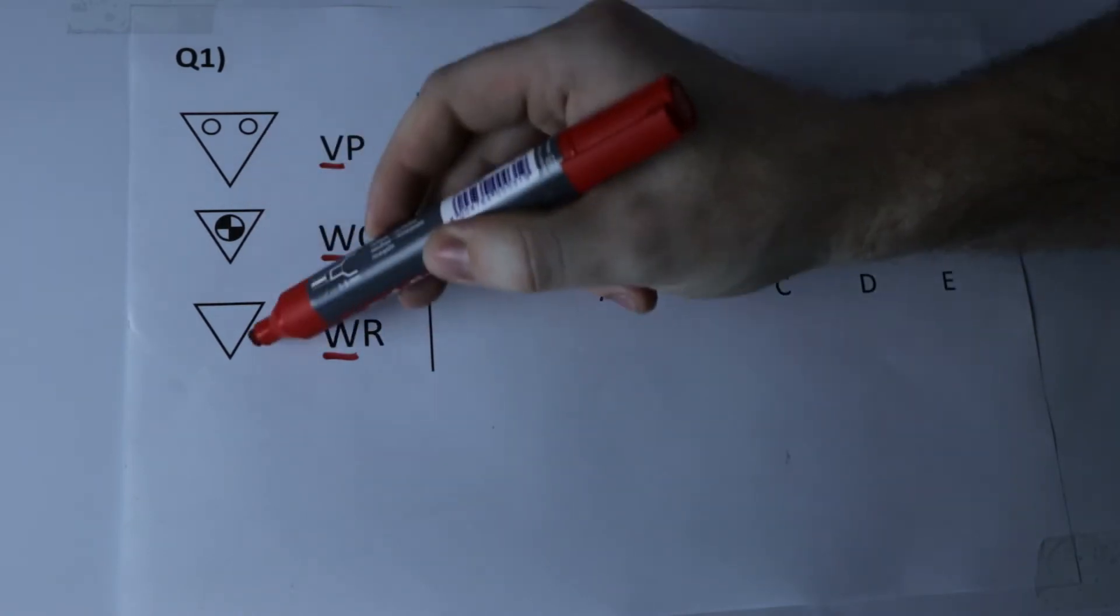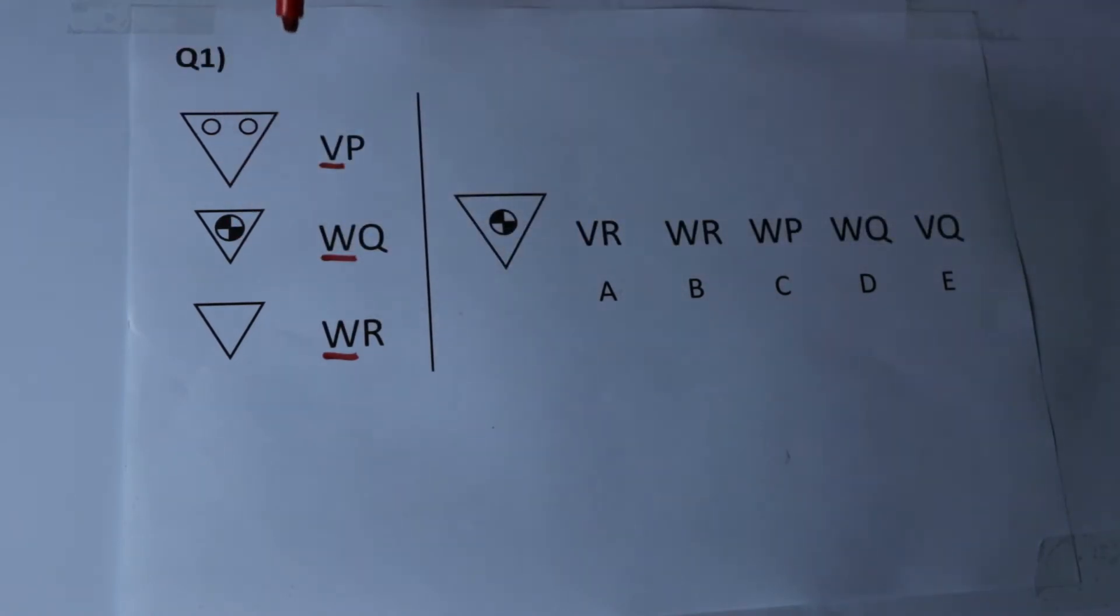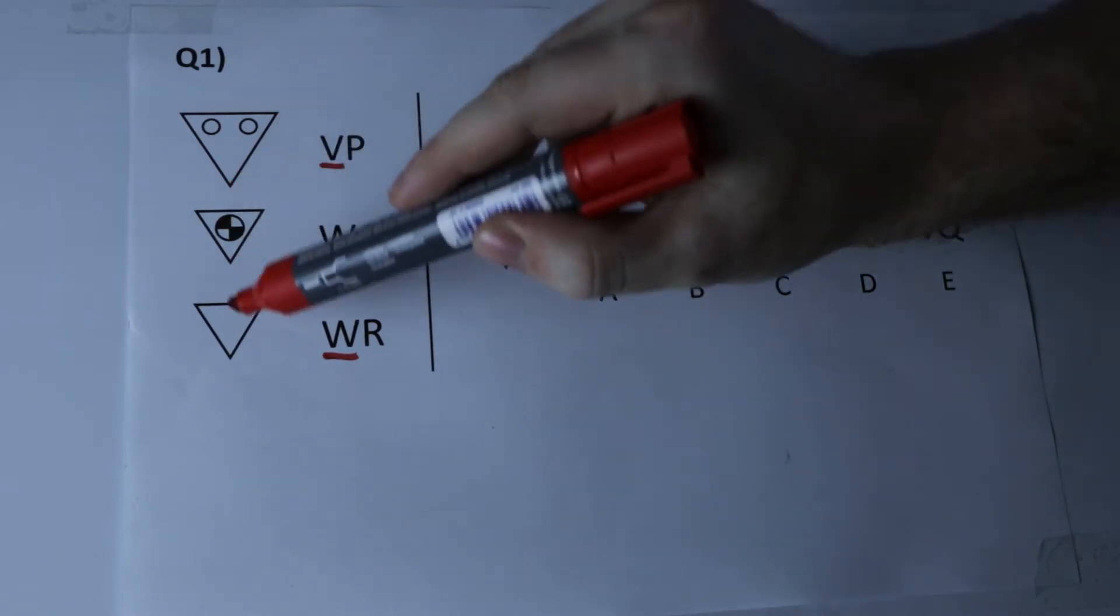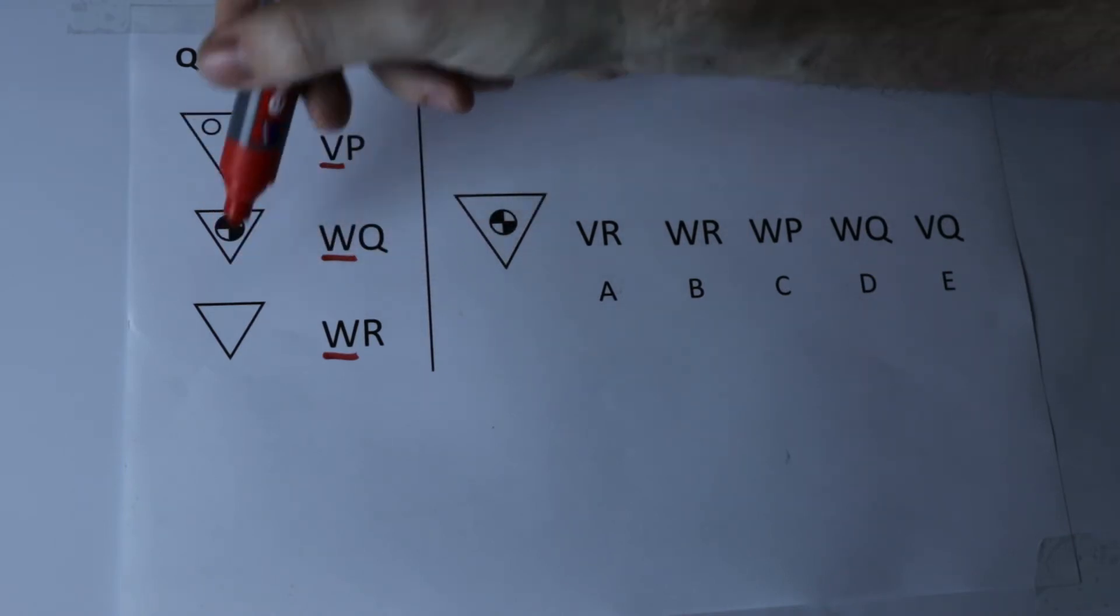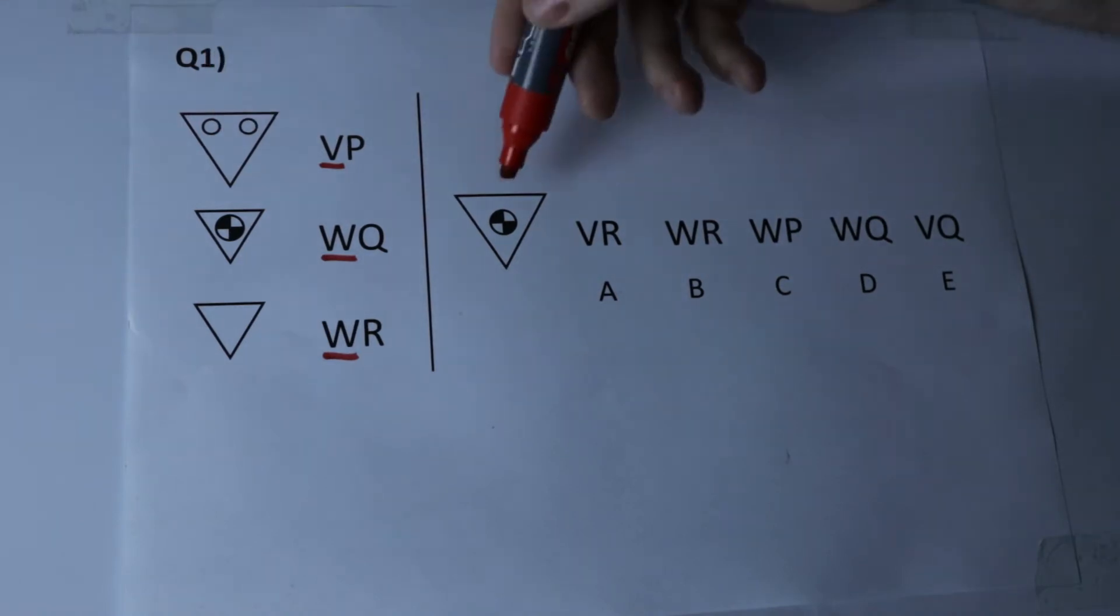What do these two shapes here have in common that W could be representing which is different in the top shape that V would be representing. Now just by having a quick look we can tell it's not the inside of the shape as these are different but it is the size of the shape. So W represents a small triangle, V must therefore represent a larger triangle so we can solve for the first letter.